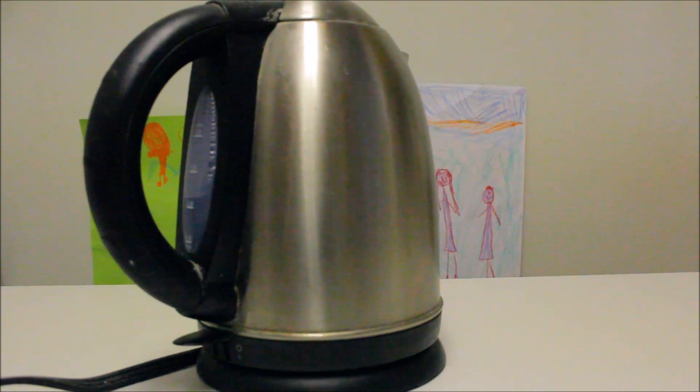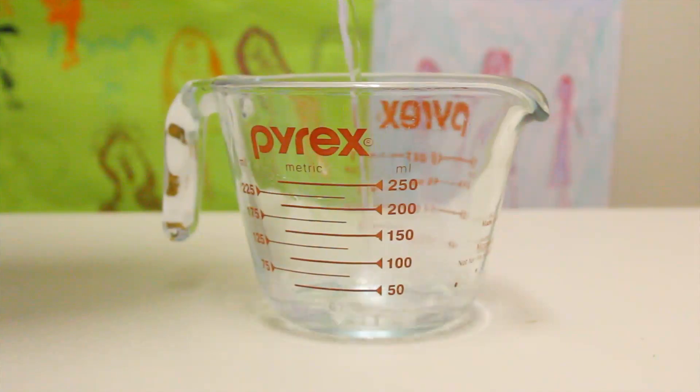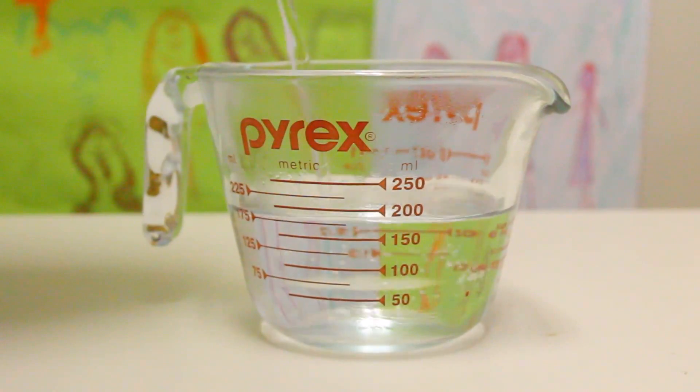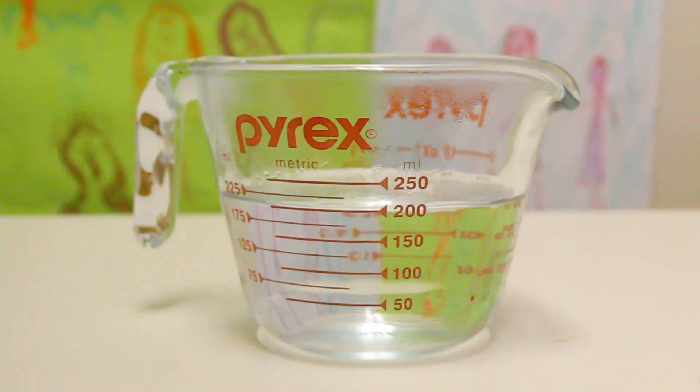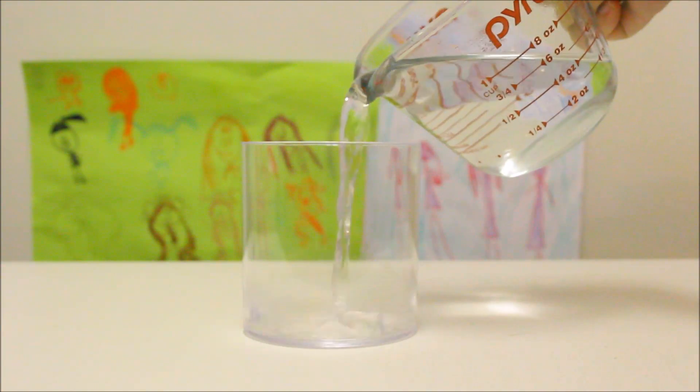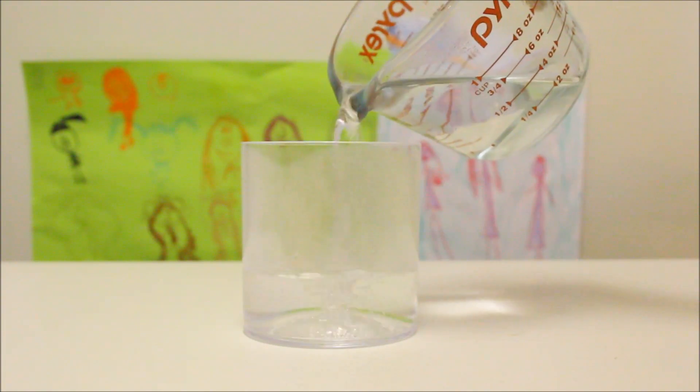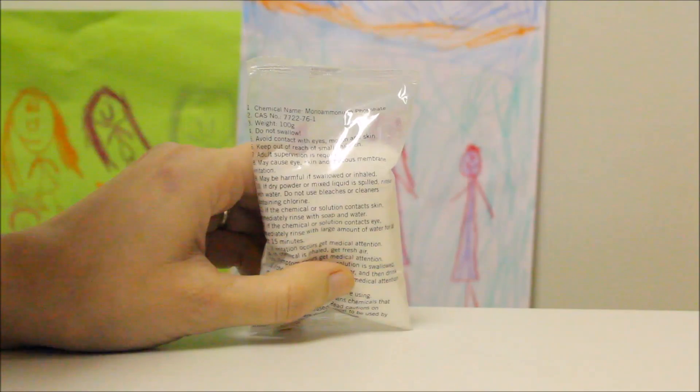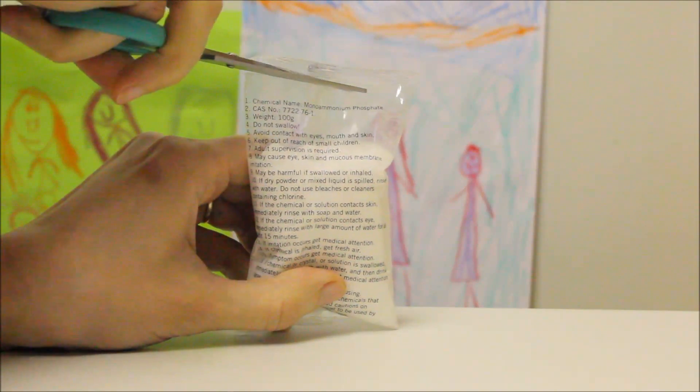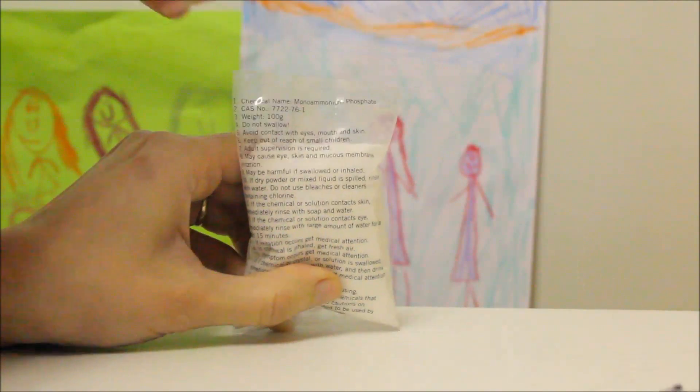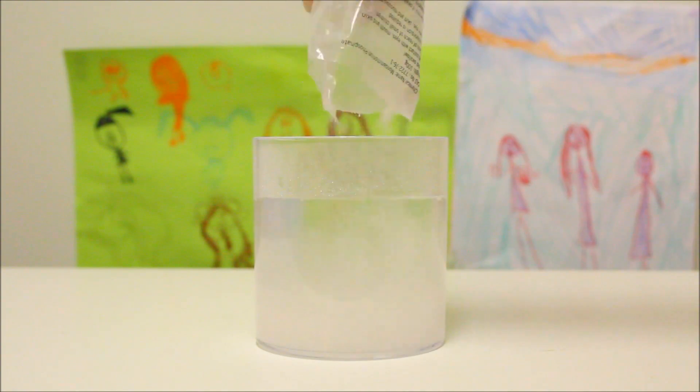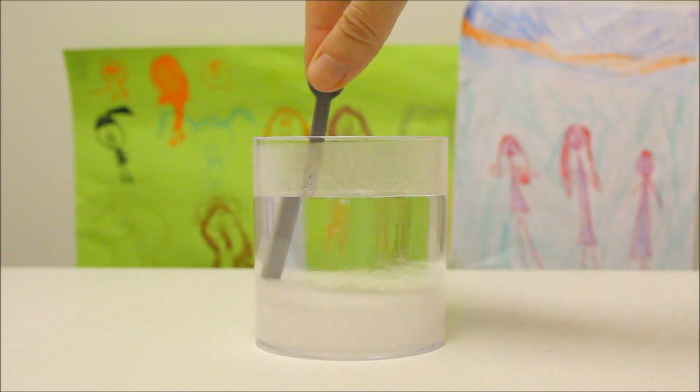First, we are going to boil some water. We need 200 milliliters. Let's transfer the hot water into the container. Now let's open the white crystal compound bag and pour it into the hot water. Let's stir the mixture until all of the compound is dissolved!